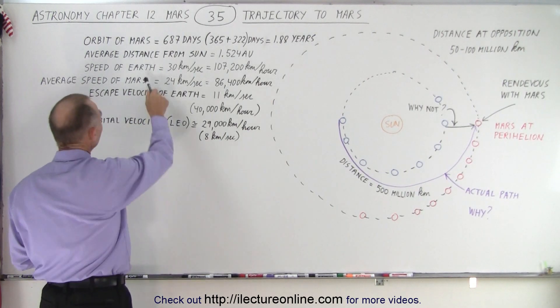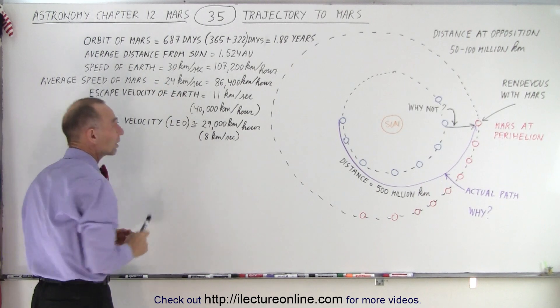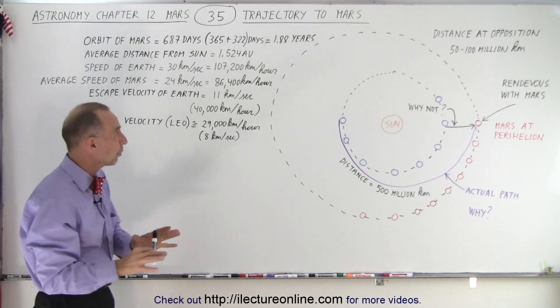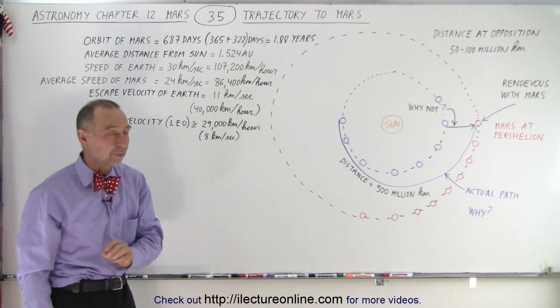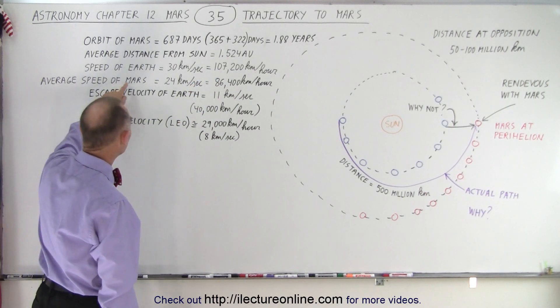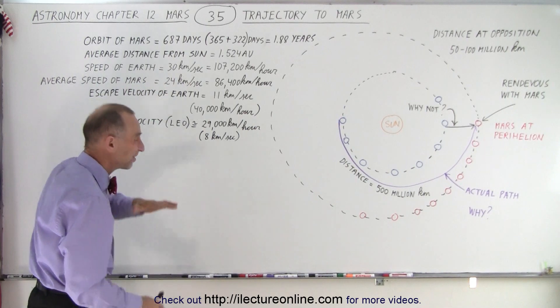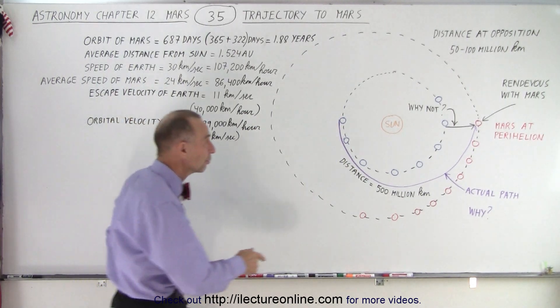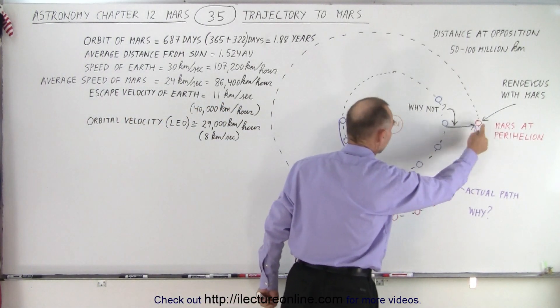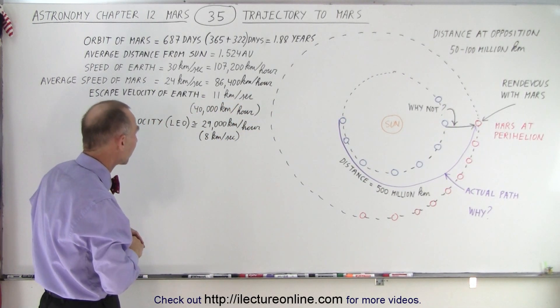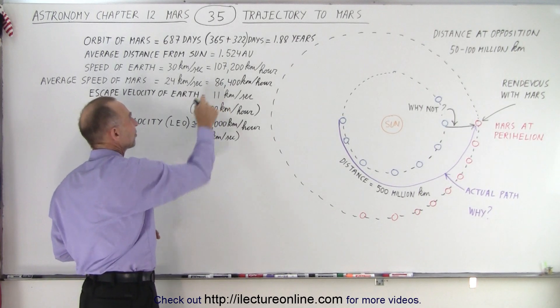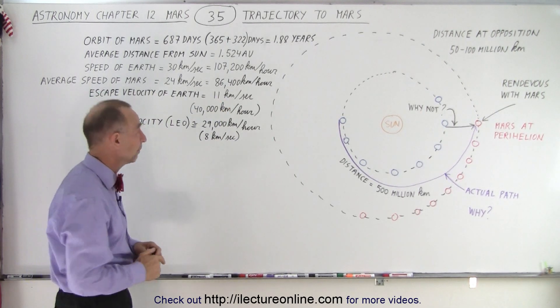But notice that the speed of the Earth around the Sun is 30 kilometers per second, not quite 30, but almost 30 kilometers per second, which is 107,000 kilometers per hour. And Mars moves around the Sun at 24 kilometers per second on average, because it will move faster here when it's at perihelion and slower when it's at aphelion, but the average velocity is about 24 kilometers per second, which comes out to be 86,400 kilometers per hour.